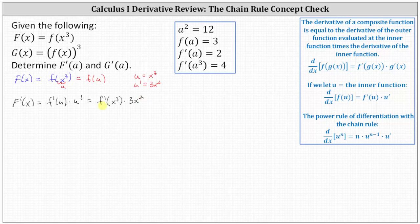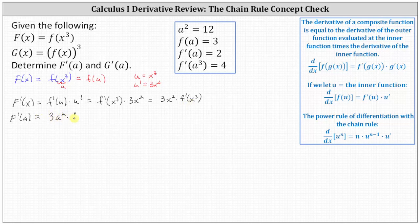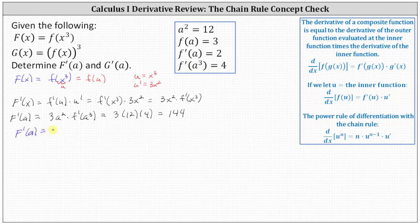Just to emphasize: f'(x³) is the derivative of the outer function evaluated at the inner function, and 3x² is the derivative of the inner function. So F'(x) = 3x² · f'(x³). We can now find F'(a) by replacing x with a, giving us 3a² · f'(a³). From the given information, a² = 12 and f'(a³) = 4, which gives us 3 × 12 × 4 = 144. So F'(a) = 144.